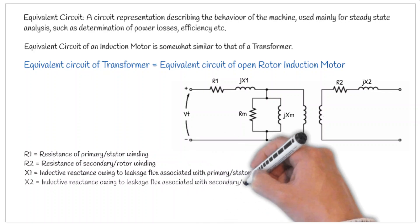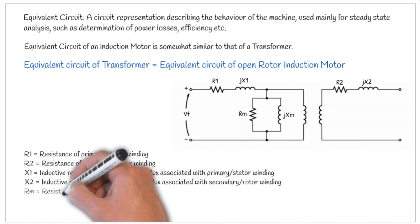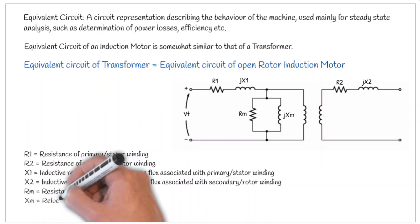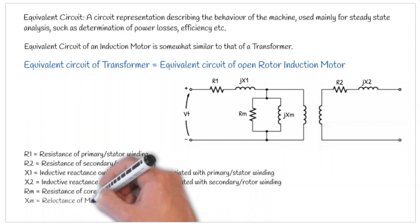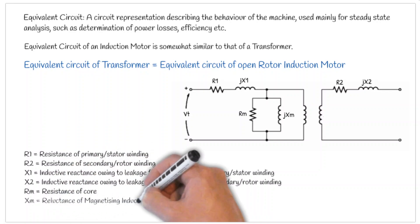How these inductive reactances are generated we have already studied in the case of transformers. Rm and Xm represent the resistance and reactance of the magnetic part.